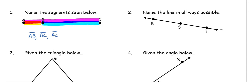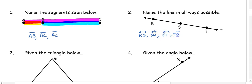Number two: name the line in all possible ways. When naming a line, we use two letters, so we could call this line RS or SR. We can also name it ST or TS, or RT or TR. Lastly, because we have a cursive letter here, we could also name it line M using that cursive letter.